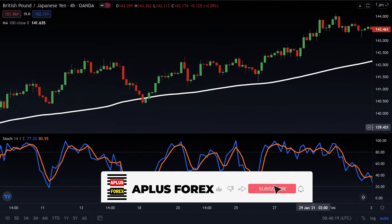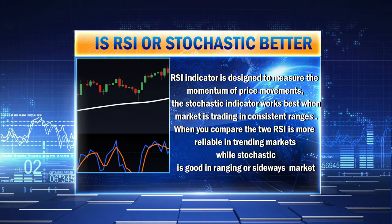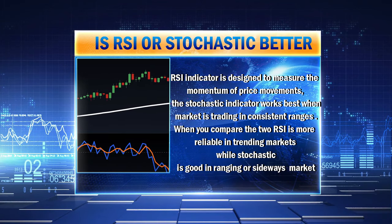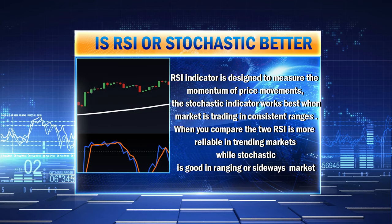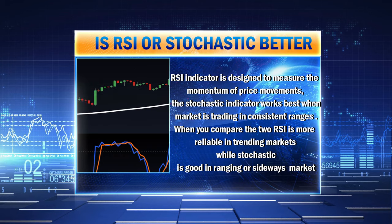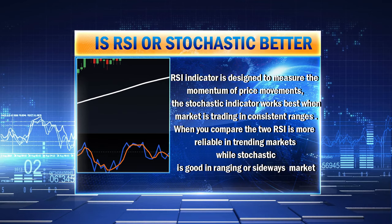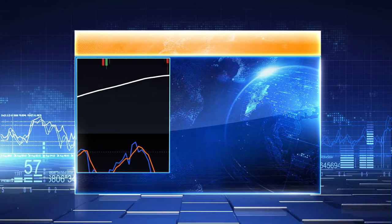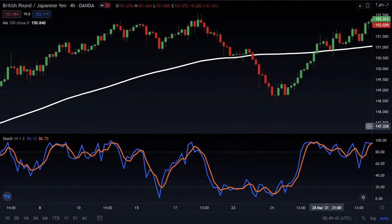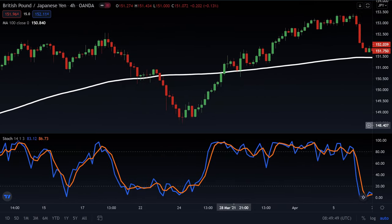Is RSI or stochastic better? The RSI indicator is designed to measure the momentum of price movements. The stochastic indicator works best when the market is trading in consistent ranges. When comparing the two, RSI is more reliable in trending markets while the stochastic is better in sideways or ranging markets. Depending on your trading strategy, you can choose which one is better. Using one indicator alone does not give a high winning ratio, unlike when you combine it with other indicators.